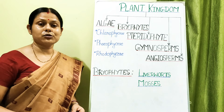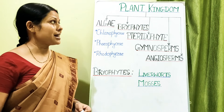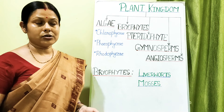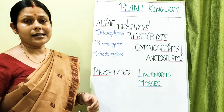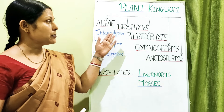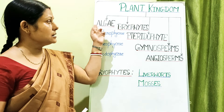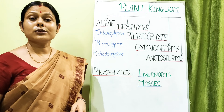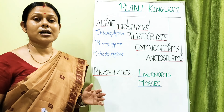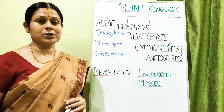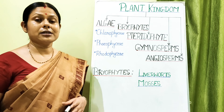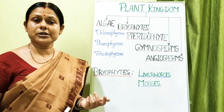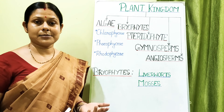In the previous class we came to know that the plant kingdom is broadly classified into five divisions. Algae, also called Thallophyta, bryophytes, and pteridophytes — these three are seedless plants. Since they are seedless, they are sometimes grouped together under Cryptogamia, meaning plants which do not bear seeds — flowerless plants.